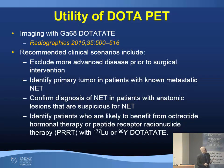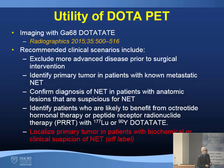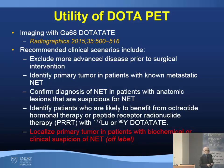In a recent review article, recommended clinical scenarios include: excluding more advanced disease prior to surgical intervention, identifying the primary tumor in patients with known metastatic neuroendocrine tumor, confirming the diagnosis in patients with anatomic lesions suspicious for neuroendocrine tumor, and identifying patients likely to benefit from peptide receptor radionuclide therapy. There is one more off-label indication — localizing primary tumor in patients with biochemical or clinical suspicion — but there really has to be some evidence that neuroendocrine tumor is present.